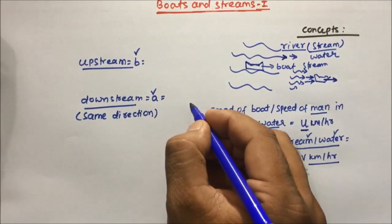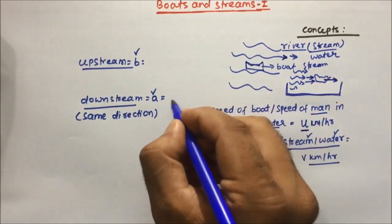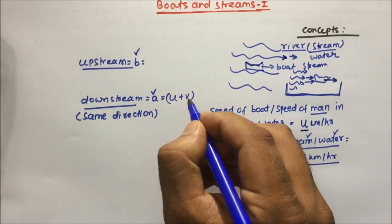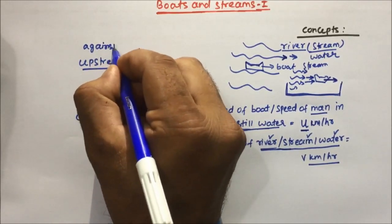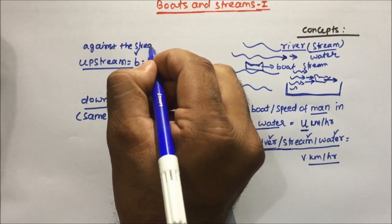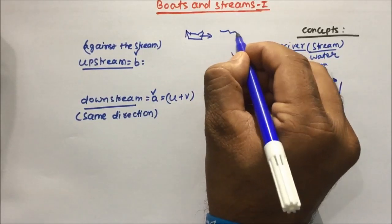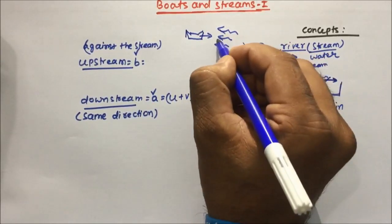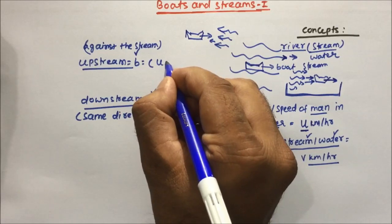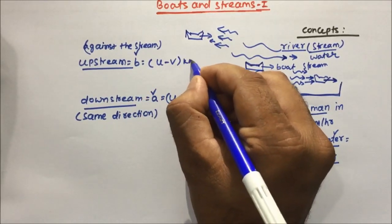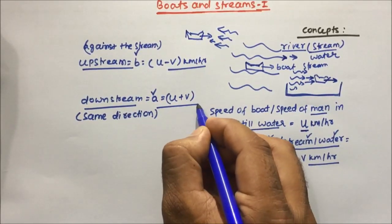So in the case of downstream, when both are moving in the same direction, the speeds get added: U plus V is the downstream speed. In upstream, the boat moves against the stream — if the boat is moving in one direction and the stream in the opposite direction, the stream puts force against the boat and the speed decreases, giving U minus V km per hour.